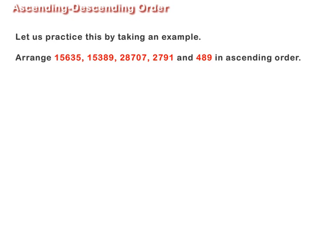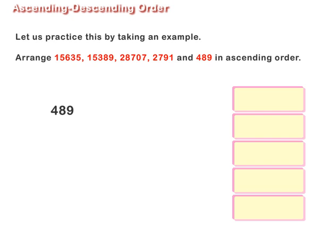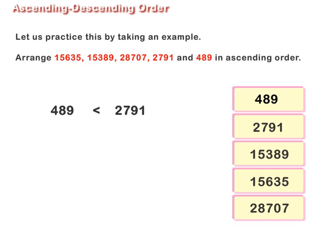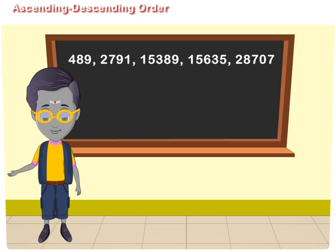2,791, and 489 in ascending order. Here the smallest number is 489, as it has only three digits. The next number greater than 489 is 2,791, as it has four digits. The other numbers have five digits, so they are greater than 2,791. Now follow rule number two and compare their leftmost digits.